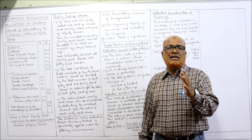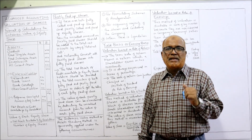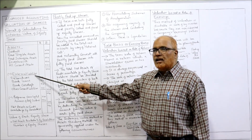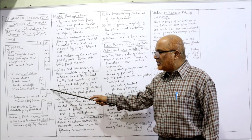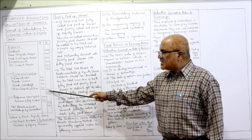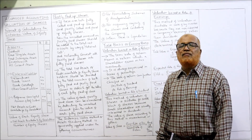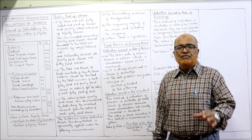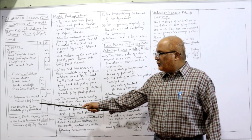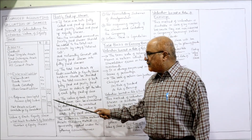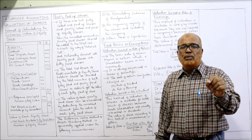Take the total of fixed assets as well as current assets. From that total, deduct external liabilities — outside liabilities consisting of debentures, bank loans, sundry creditors, outstanding expenses, and provision for taxation. Take the total of the external liabilities. Then assets minus external liabilities. Next, deduct preference share capital, including any preference dividend in arrear — if some years' preference dividend was not paid, that amount is also deducted. The remaining amount is called net assets or funds available for equity shareholders.